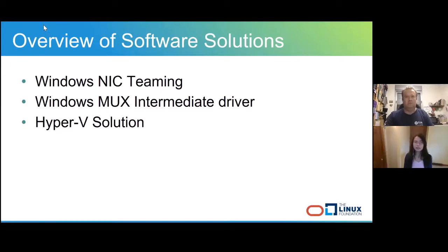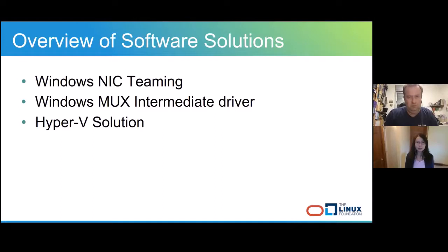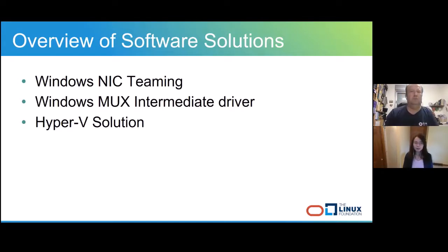Thanks Jan. Hi everyone, this is Annie from Oracle. Today I'm going to talk about the software solutions for SR-IOV live migration in Windows. These solutions focus on switching data paths seamlessly between VF network and the virtual network. Before initiating the migration, the VF network adapter will be hot removed and all network traffic will be redirected to the virtual network data path. After migration is done, the VF network adapter will be hot added on the target. Today I will talk about existing solutions: Windows NIC Teaming, the Windows MUX Intermediate driver, and the Hyper-V solution, and then the 2net-dev model in Windows VirtIO driver.